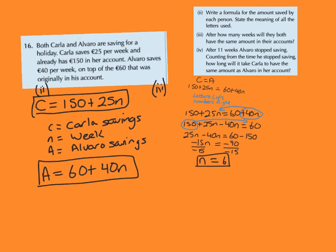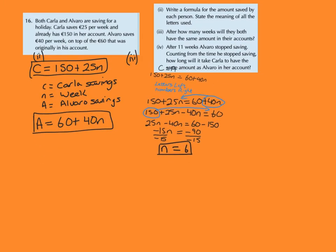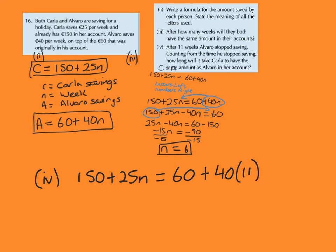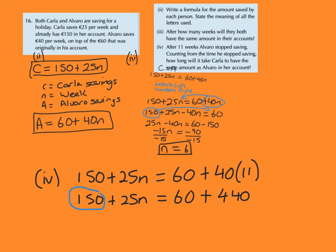I'll upload all the workings on Schoology afterwards. For the third part, I can use 150 plus 25n equals 60 plus 40n. Instead of n for Alvaro's side I can put in 11, because we're told Alvaro stopped saving after 11 weeks. What I'll get then is 150 plus 25n equals 60 plus 40 times 11, which is 440.